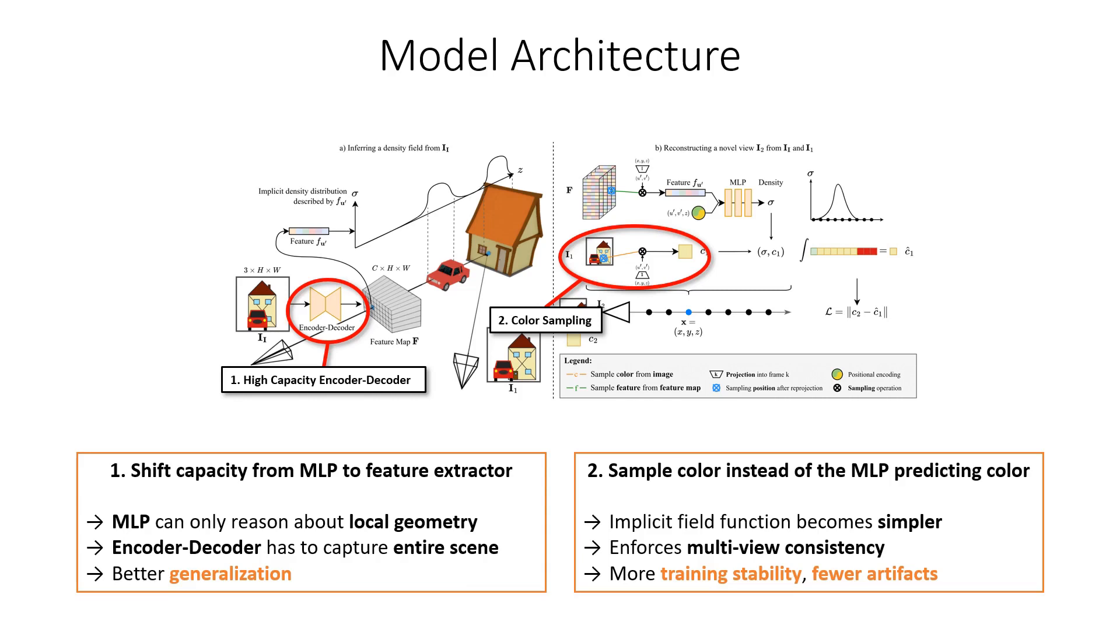Additionally, color sampling enforces multi-view consistency between different frames. Therefore, the predicted geometry is trained to be more accurate and we get fewer artifacts, even with a small number of views.